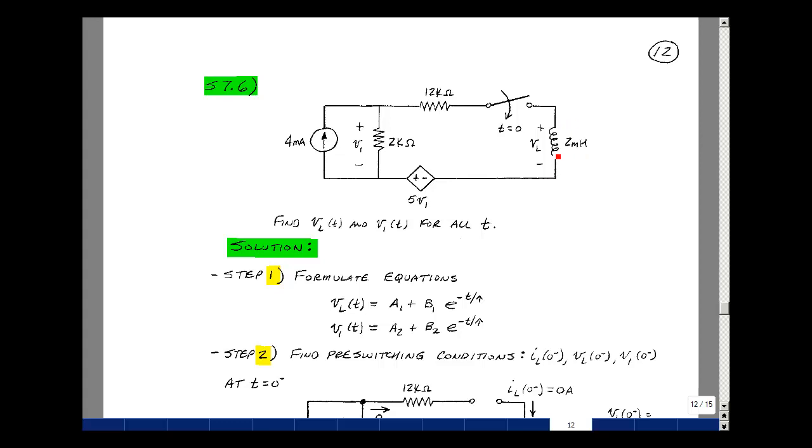Given this one inductor circuit, which has a single pole, single throw switch, an independent current source, a dependent voltage source, and two resistors, can you solve for the voltage across the inductance and across the 2k resistor? This is still a one inductor circuit, so we can use the algorithm we developed in Chapter 7. Now let's do those six steps.